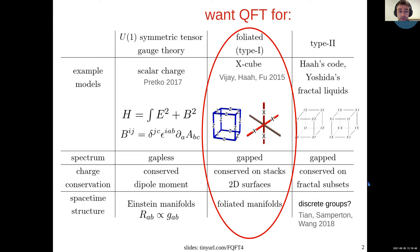As most of you are familiar, there are three classes of fracton models. One is the gapless fracton models, the U(1) symmetric tensor gauge theories, which Michael Pretko came up with. These are like fractonic versions of electromagnetism, where you also have dipole moment conservation. And there are also two classes of gapped fracton models, the type-1 and type-2 phases.